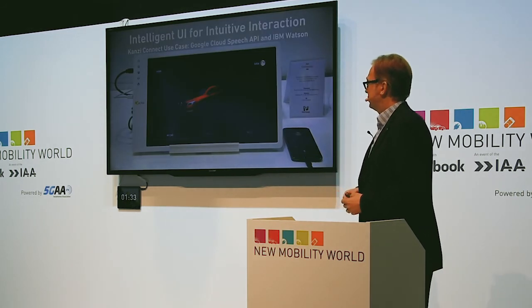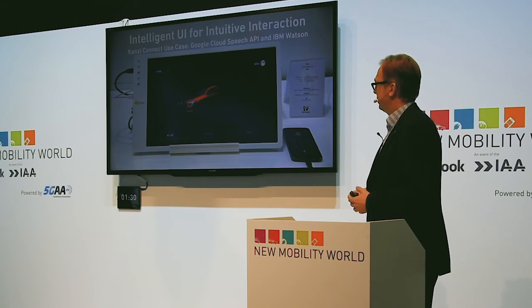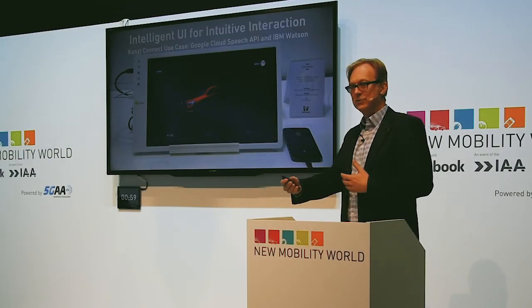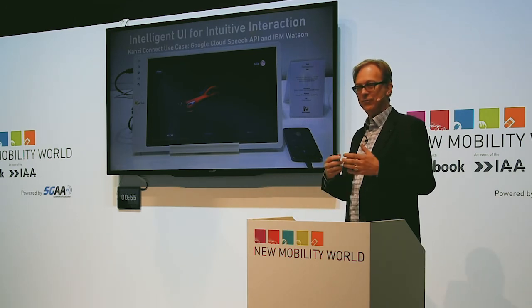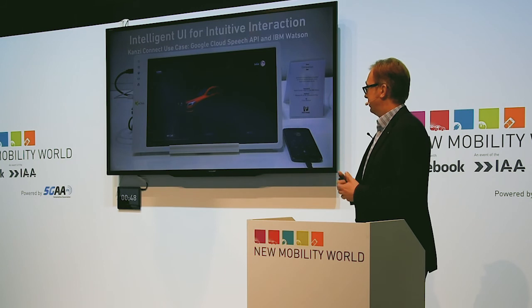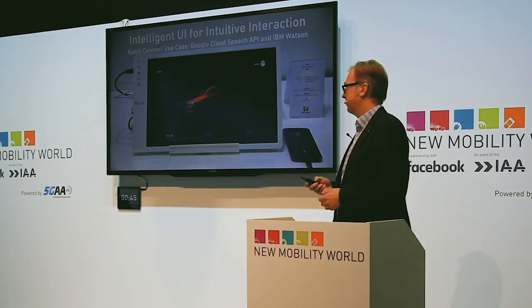Another demonstration we have here is one where we recently worked with IBM's Watson team. This is an example of an IVI system where you're able to engage in dialogue — instead of just giving voice commands the way we did previously, going out to the Google Speech cloud API and bringing back text to control the IVI system, we're now able to extend the functionality by bringing in a smartphone that also connects to Watson, allowing for a much more natural dialogue-kind interaction with the car. We're driving ways of bringing intuitive and natural interaction with the system.